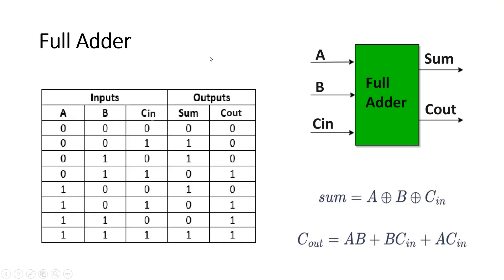Friends, this is a full adder. It has three inputs — A, B, and C-in — and two outputs: sum and carry C-out. This is a truth table of a full adder, and all the combinations of A, B, and C are written here.